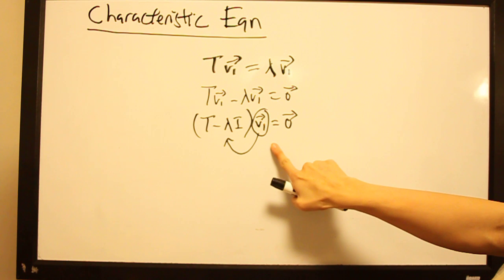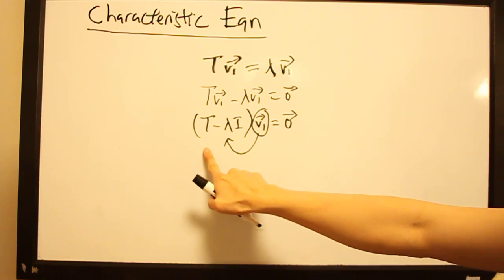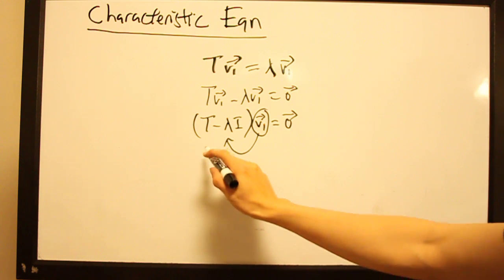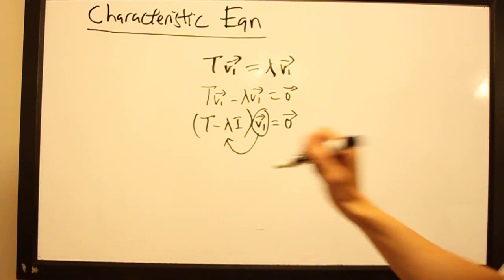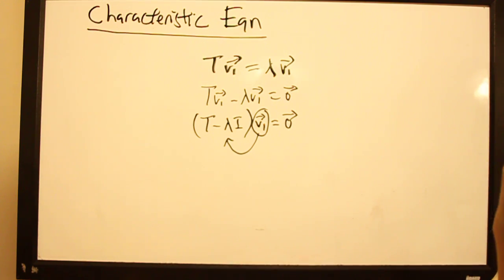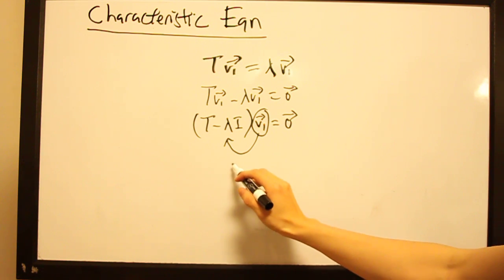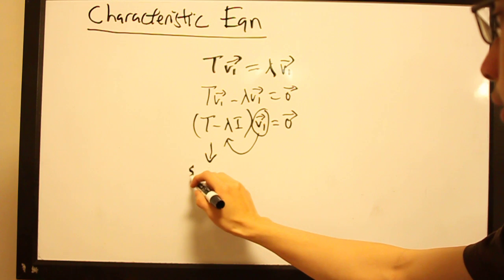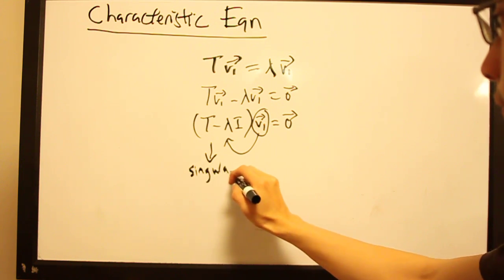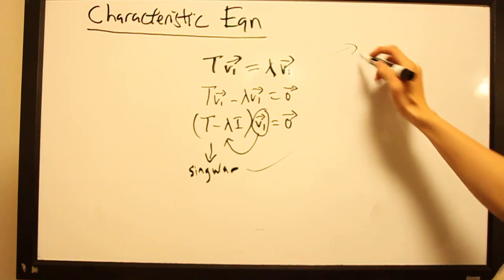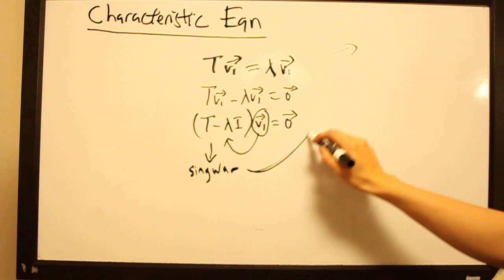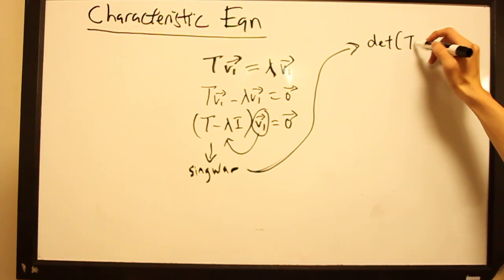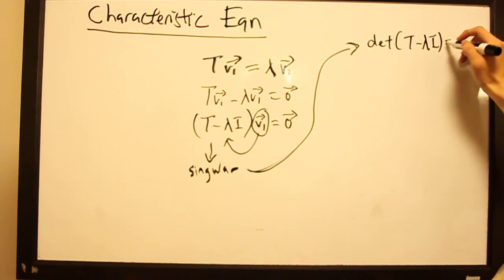Remember that eigenvectors of a transformation are never zero vectors. So this means that t minus lambda i has a non-trivial null space, which means that this matrix is singular. And we know that the determinant of a singular matrix is zero.